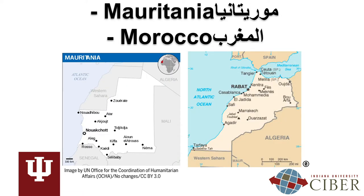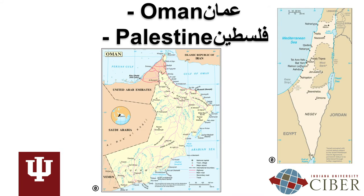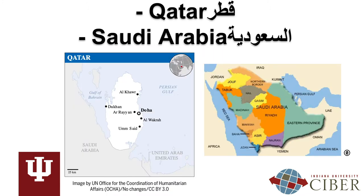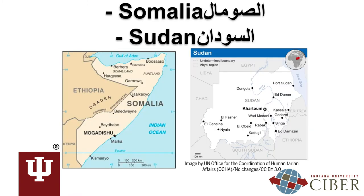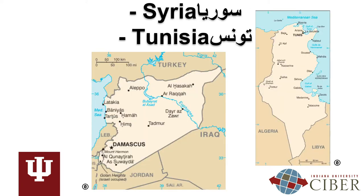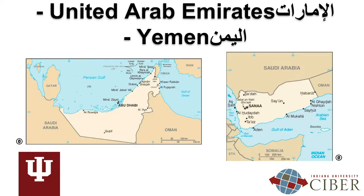Libya. Mauritania, Mauritania. Morocco, al-Maghrib. Oman, Oman. Palestine, Palestine. Qatar, Qatar. Saudi Arabia, al-Saudiya. Somalia, al-Sumal. Sudan, al-Sudan. Syria, Syria. Tunisia, Tunis. United Arab Emirates, al-Emirat. And Yemen, al-Yaman.